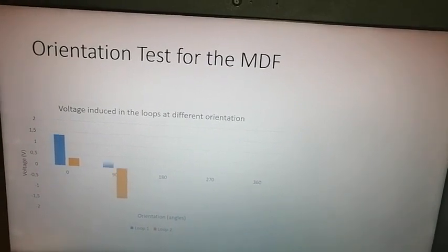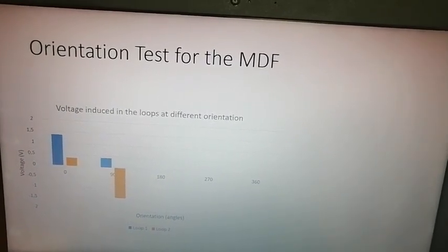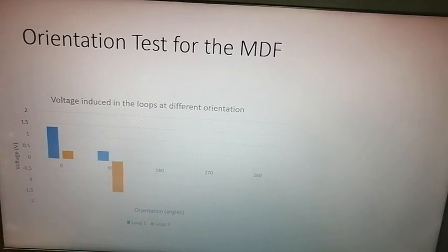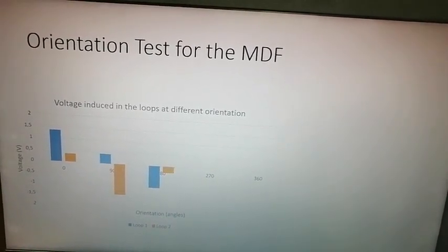At 90 degrees loop 1 is smaller than loop 2, but loop 2 is negative due to reverse polarity. At 180 degrees loop 1 is larger than loop 2 and they are both negative.